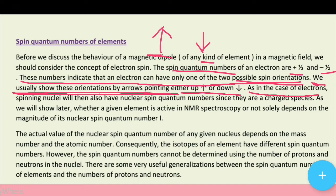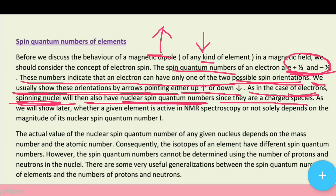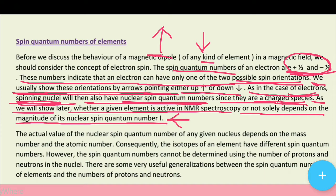As in the case of electrons, spinning nuclei will also have nuclear spin quantum numbers, since they are charged species. As we will show later, whether a given element is active in NMR spectroscopy or not solely depends on the magnitude of its nuclear spin quantum number I. Koi element NMR spectroscopy active hai ya nahi, yah nuclear spin quantum number pe depend karta hai.